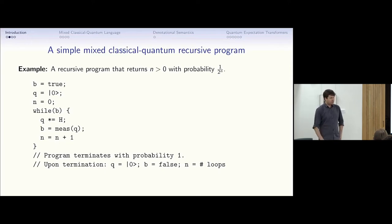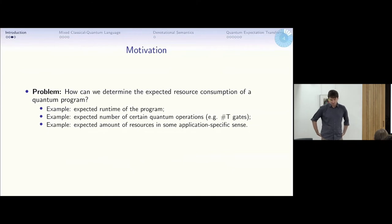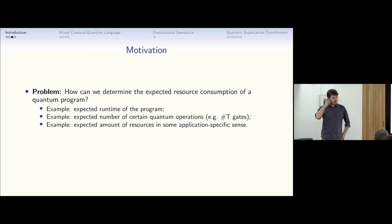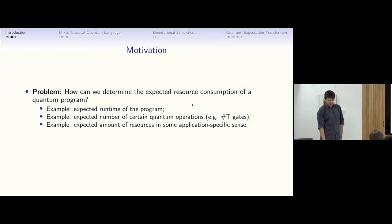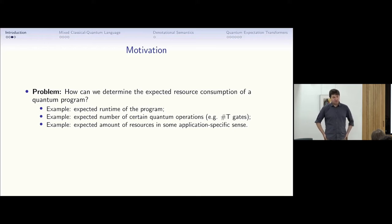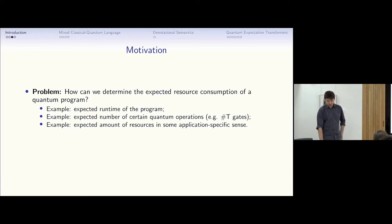There is no upper bound on the number of steps that leads to termination. Our motivation is: how can we determine the expected cost of a quantum program? The cost is very general — specific examples we can handle include the expected runtime of a program, the expected number of T gates used, or even more general cost models depending on how cost annotations are inserted into the program.